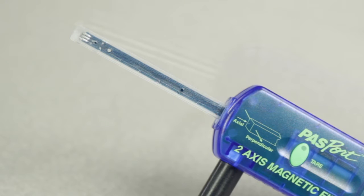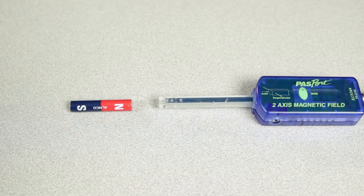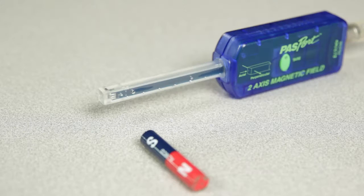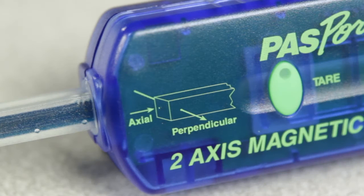Two perpendicular Hall effect devices at the end of the sensor's probe are used to measure the component magnitude of magnetic field strength in the axial and perpendicular directions as illustrated in the diagram printed on the sensor case.